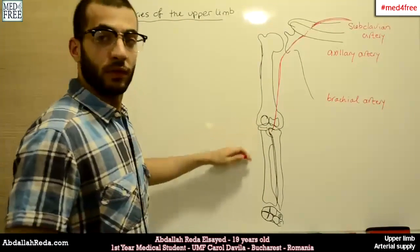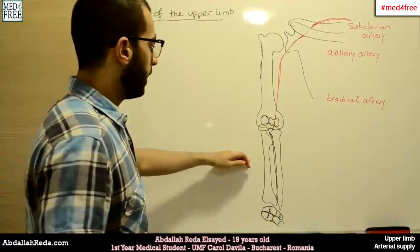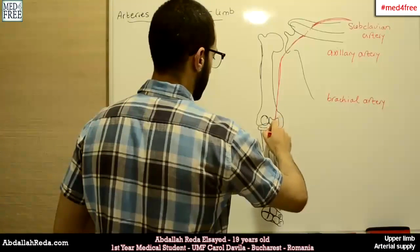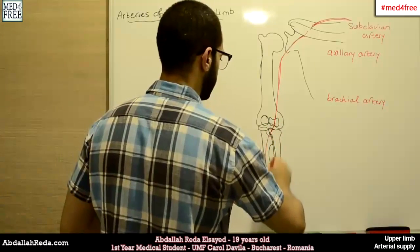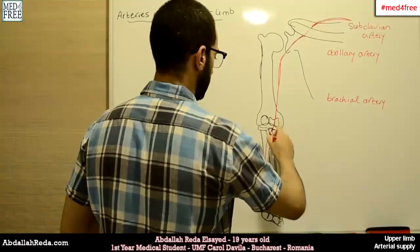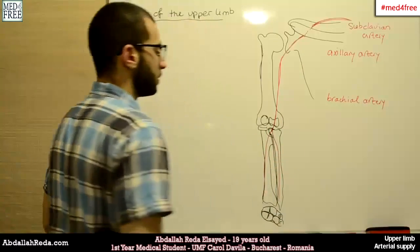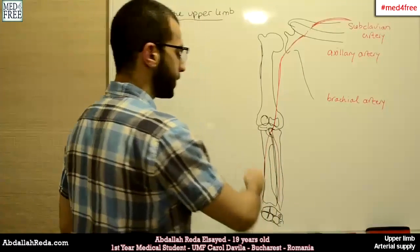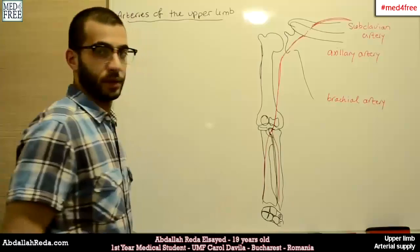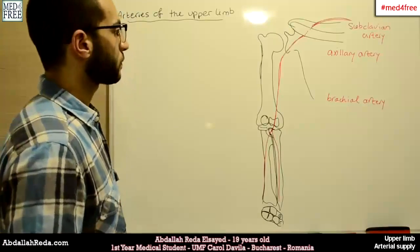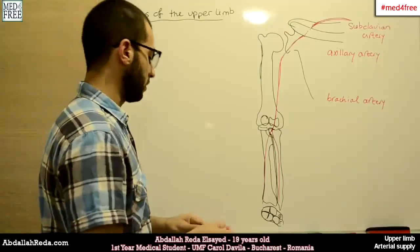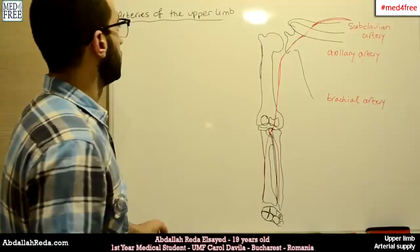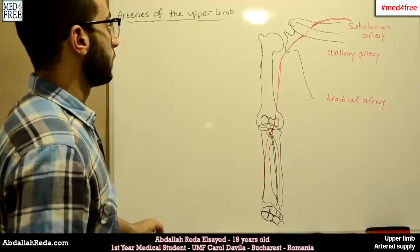Then it goes into the forearm and it branches into two branches. We have the radial and the ulnar — so we have the ulnar artery and the radial artery. This is the main course of the arterial supply of the upper limb.